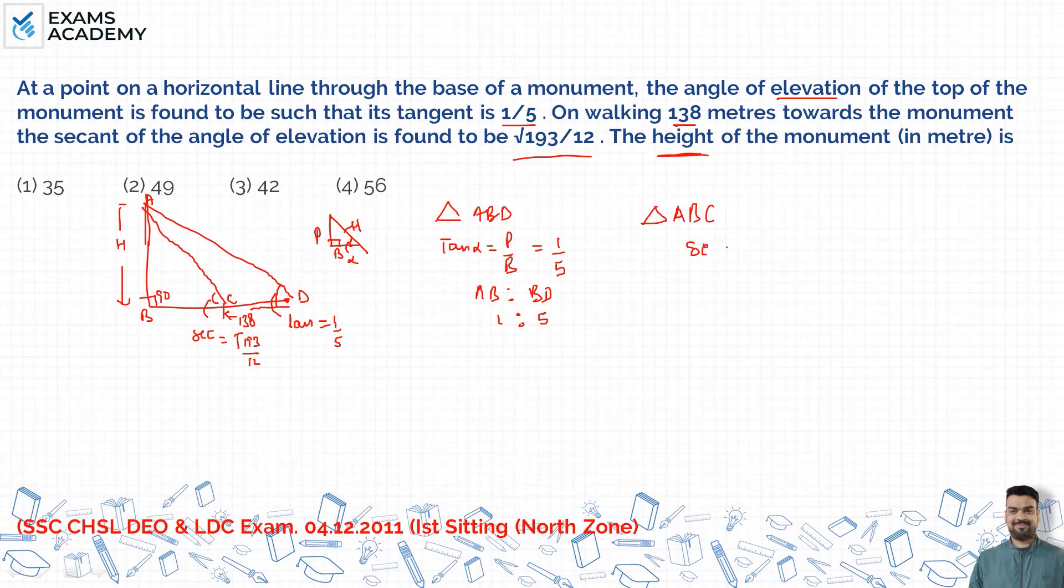So secant is root 193 by 12. If you have a right angle and this is alpha, then sec alpha is hypotenuse upon base. It means that this value is root 193 given, and base is 12. You have not perpendicular, but if you have something common in two triangles, which is common, then we will remove it. So here you have your hypotenuse and base.